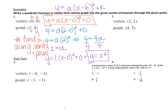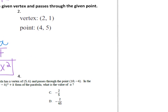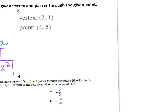Let's try number 2. If we have a vertex and a point, we want to write a quadratic through that point using the vertex. We're going to label: this is h, this is k, this is x, and this is y. My y is 5, equals a times x which is 4, minus h which is 2, squared, plus k which is 1. So I get 5 equals a times 4 minus 2 squared plus 1.